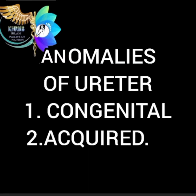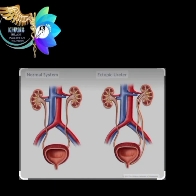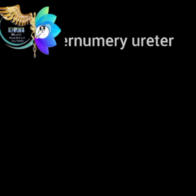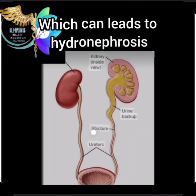Anomalies of ureter: 1. Congenital. 2. Acquired. Congenital anomalies of ureter include: 1. Ectopic ureter. 2. Supernumerary ureter. The most common acquired anomaly of the ureter is ureteric stones, which can lead to hydronephrosis.